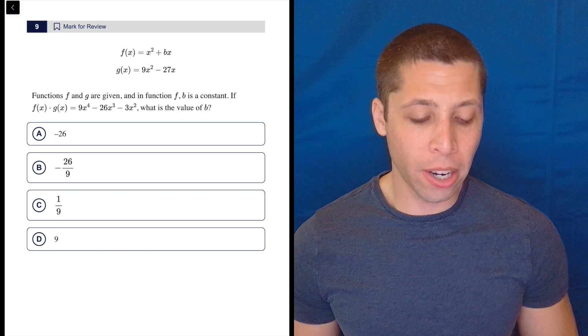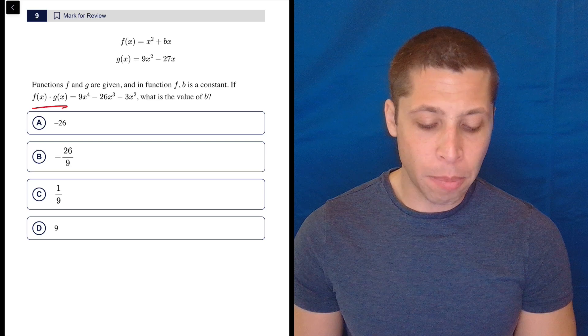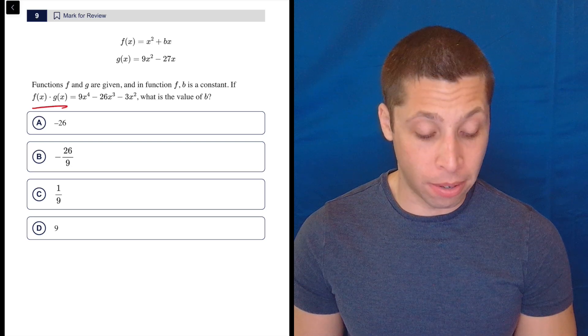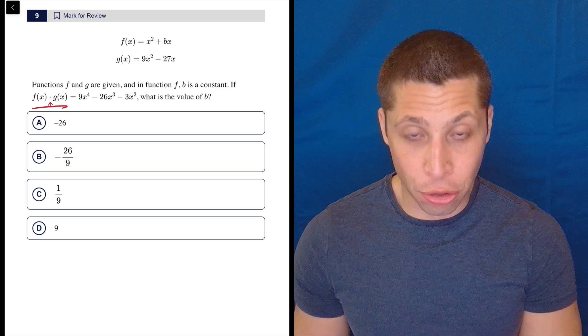There are a couple ways to do this. I'm pretty sure I know how the College Board wants us to solve. They want us to recognize that this means to take the two equations they give us above and multiply them, right? That little dot there, I know it's tiny,